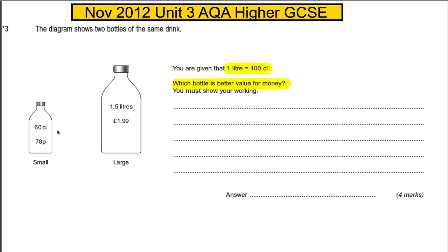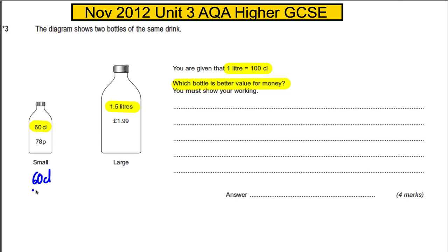We've got 60 centiliters at 78p, and we've got 1.5 liters. Since each liter is a hundred centiliters, that must be 150 centiliters at £1.99.